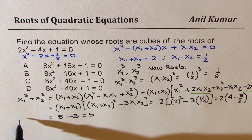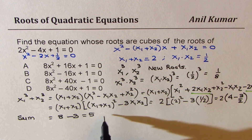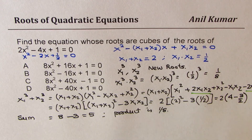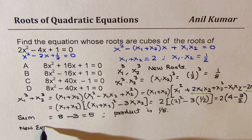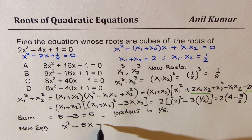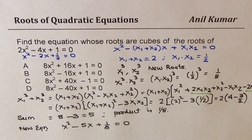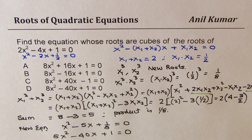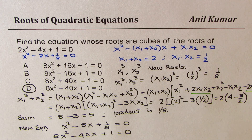So the sum of the cubed roots is 5 and the product is 1 over 8. The new equation will be x squared minus 5x plus 1 over 8 equals to 0. Multiplying by 8, we get 8x squared minus 40x plus 1 equals to 0. That matches choice D — the equation whose roots are the cubes of the roots of the given equation.